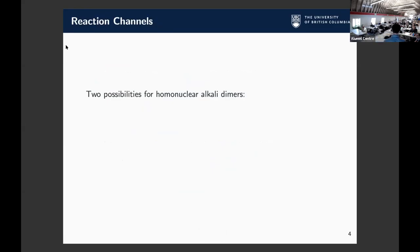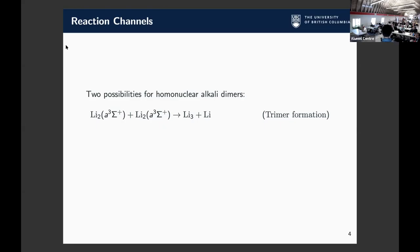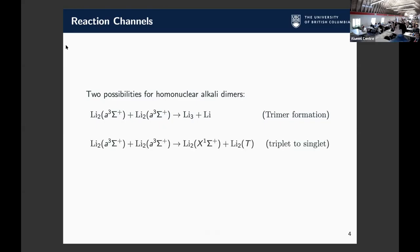Our particular dimer is lithium-2, which we actually know to be chemically unstable. It might be correct to ask how this can tell us about short-lived samples of chemically stable molecules. For this lithium-2 molecule, which is in the triplet state — and actually for all homonuclear dimers in the triplet state — trimer formation is always energetically allowed, as is triplet-to-singlet conversion. In our case, the triplet-to-singlet conversion is known to be suppressed, so trimer formation dominates.